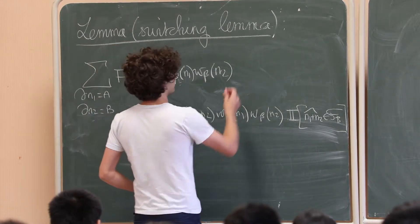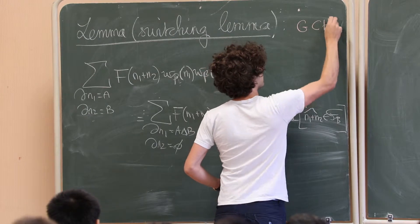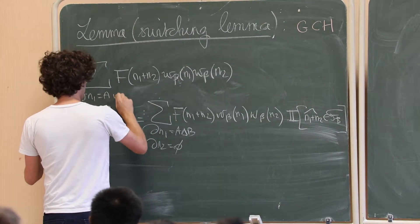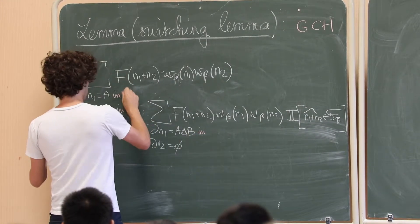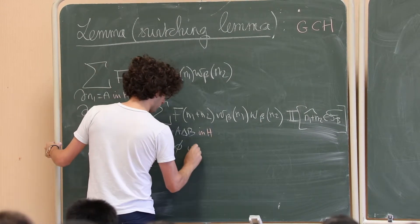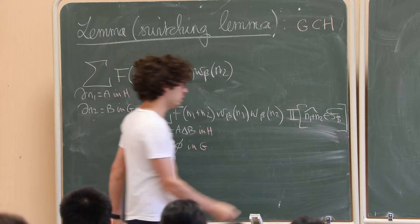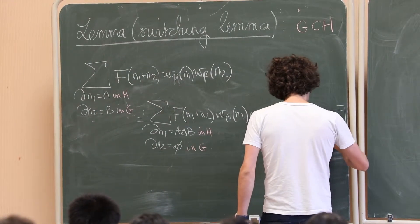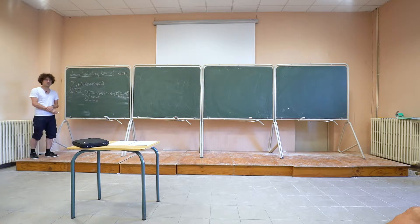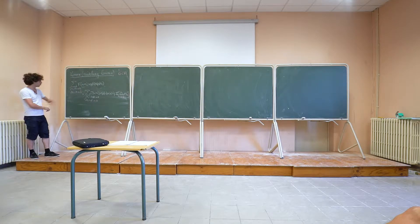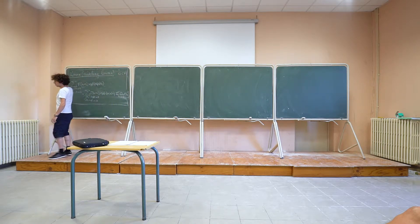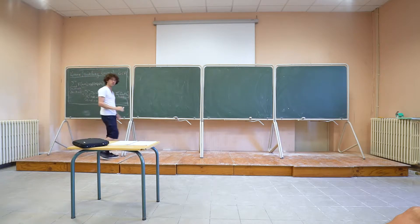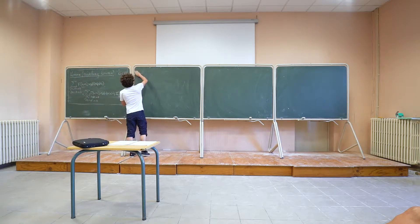There is a slight generalization we will use: if n1 is in graph g and n2 is in graph h, you are still allowed to switch, but the connectivity condition must hold in g when you restrict the currents to g. The first graph can be bigger than the second one. I'll prove the case g=h and leave the other to you.